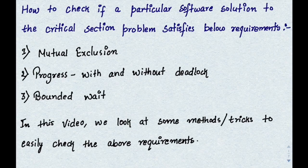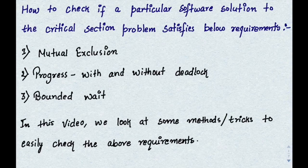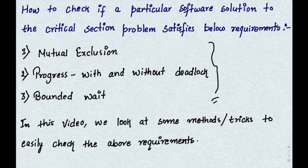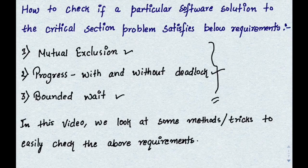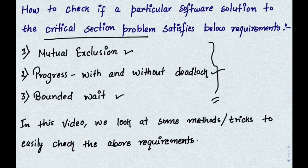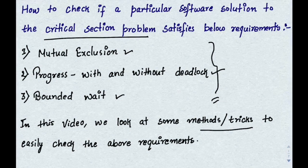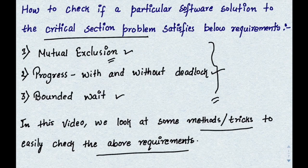Hello friends. In this video we will look at how to check if a particular software solution to the critical section problem satisfies the requirements: mutual exclusion, progress, and bounded wait. I have already explained these requirements in my video about the critical section problem — I'll attach that link in the description. In this video we are going to look at some methods and tricks to easily check the above requirements.